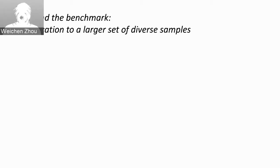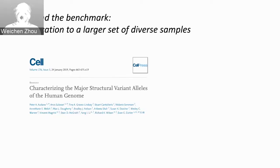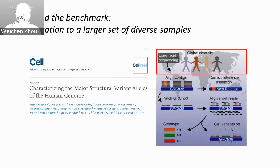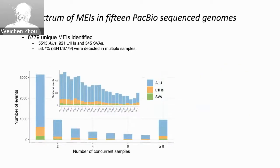Based on previous results from just one single genome, we wanted to apply Palmer to a larger cohort. A recent study used long read sequencing technology and assembly-based methods to investigate structural variations including mobile insertions in 15 genomes, mostly from different populations representing global diversity. We ran Palmer on those 15 genomes and obtained a spectrum of more than 6,000 unique mobile element insertions from these PacBio-sequenced genomes.